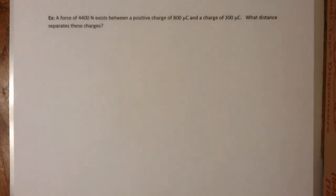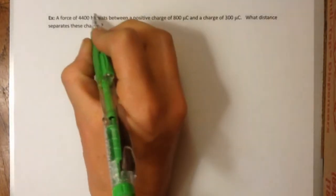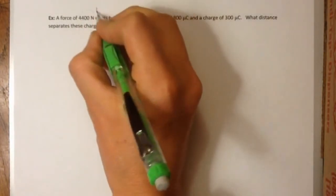Okay, so this video is meant to go through an example of electrostatic force with you. So let's just read through it. It says a force of 4,400 newtons exists between a positive charge of 800 microcoulombs and a charge of 300 microcoulombs. What distance separates these charges? So let's just start off by identifying quantities.